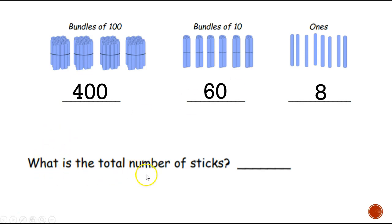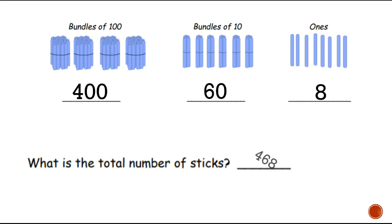Now it's asking us: what is the total number of sticks? I have four hundred sticks here, sixty here, and eight here. We need to put all of these together and write one big number. What is that number going to look like? The total number should look like this — you should have written four hundred sixty-eight. Good job!